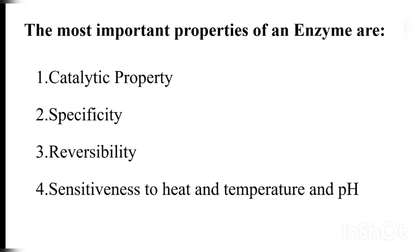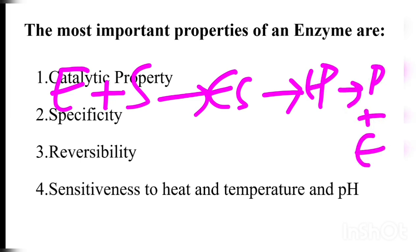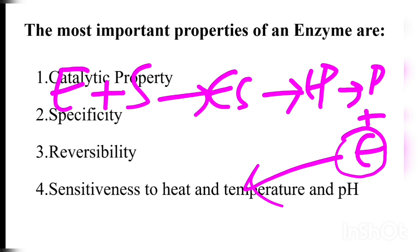Four important properties of enzymes are: catalytic property, specificity, reversibility, and sensitivity to heat, temperature, and pH. Reversibility means one enzyme can act on a substrate, form an enzyme-substrate complex, then form a product, and finally detach from that product to act on another substrate. The product then enters the metabolic pathway, while the enzyme is reused.